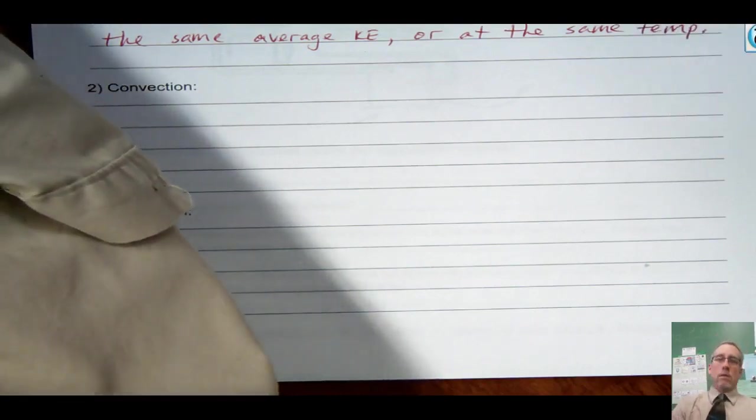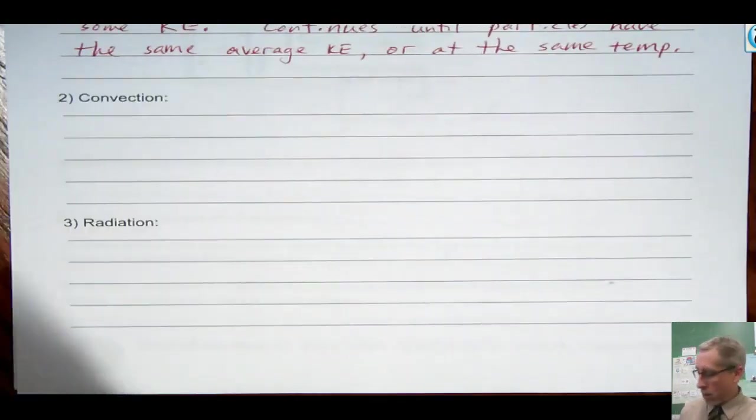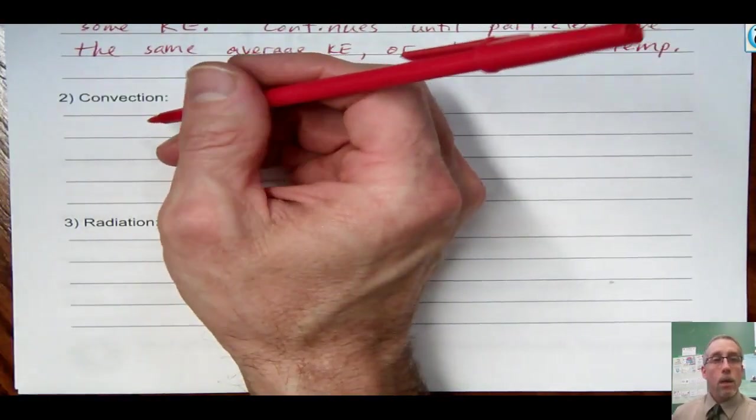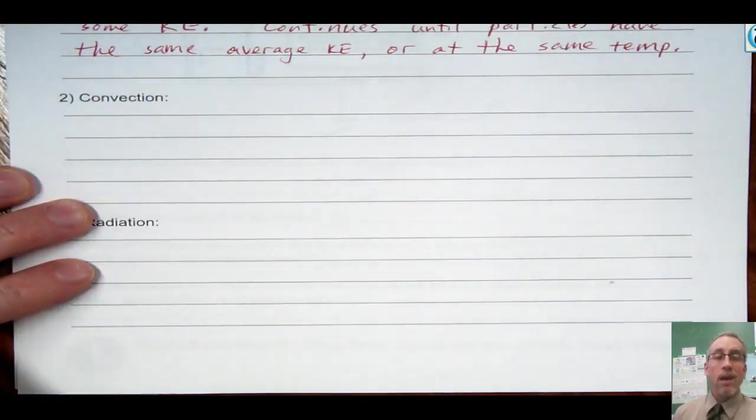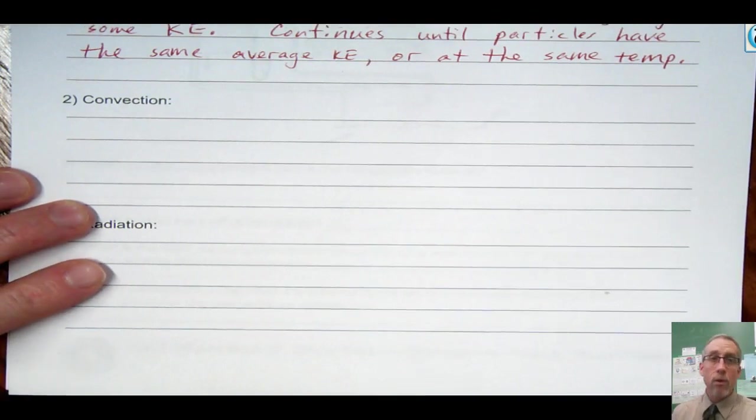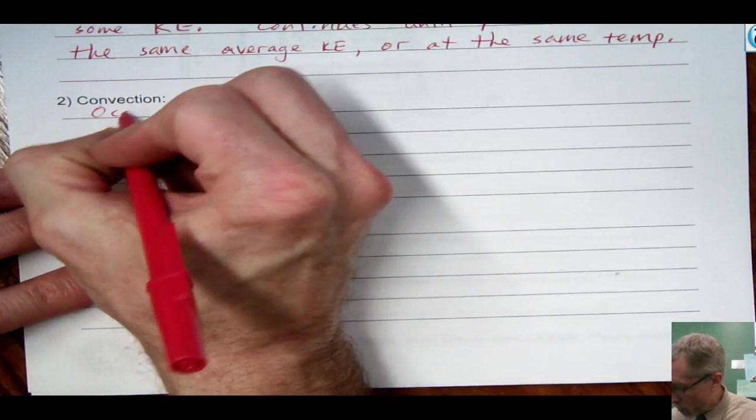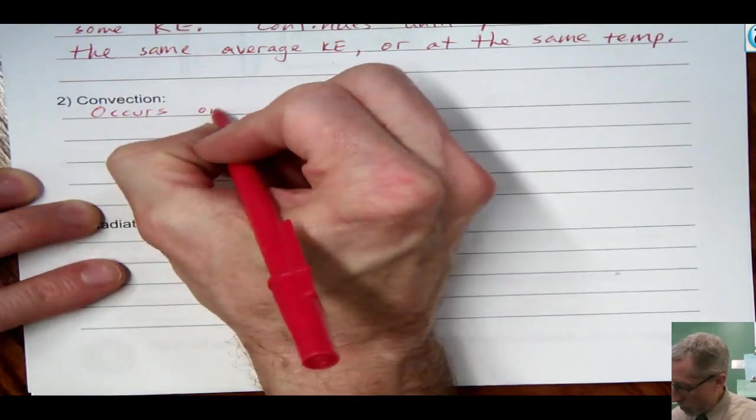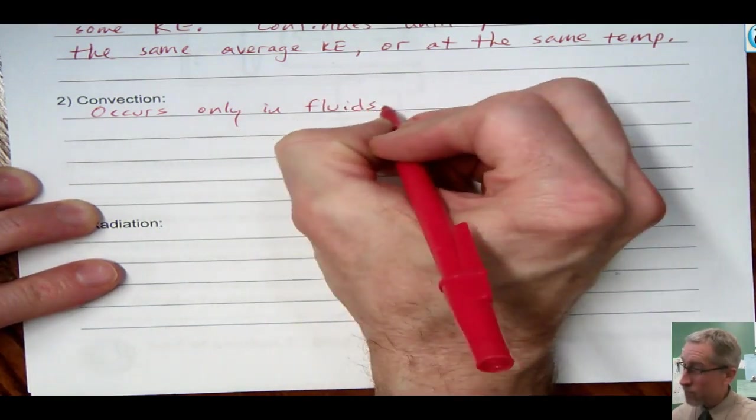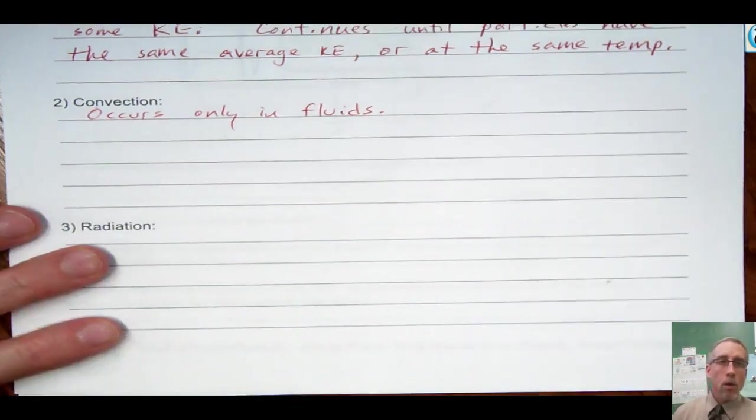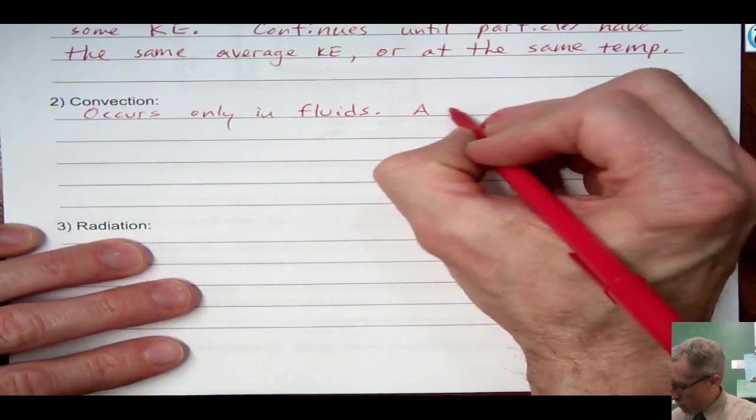So convection is a little bit different. Convection does not require direct contact the way conduction did. And when I describe convection, you'll see that it requires that it be a fluid, a fluid, which means like a liquid or a gas, something that can flow. So this occurs only in fluids.